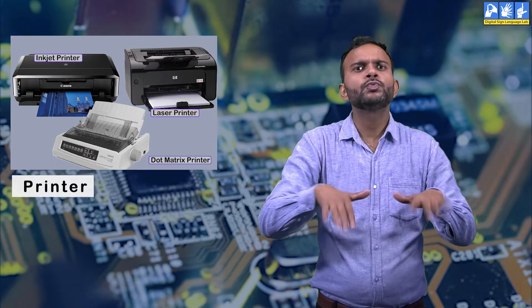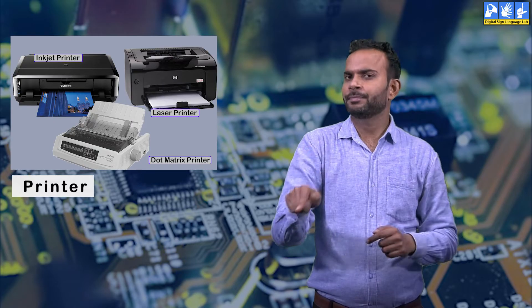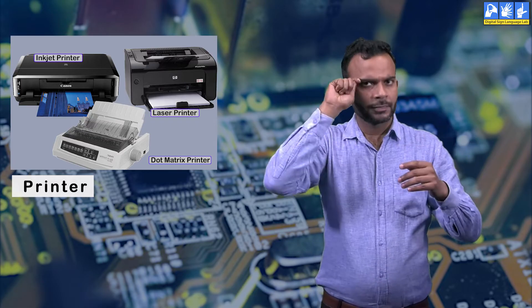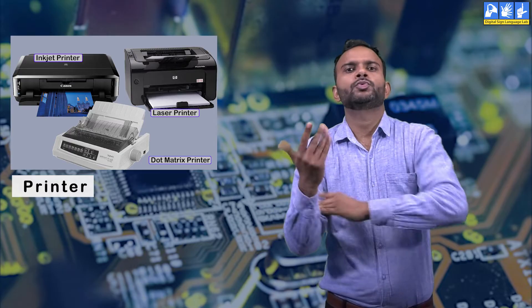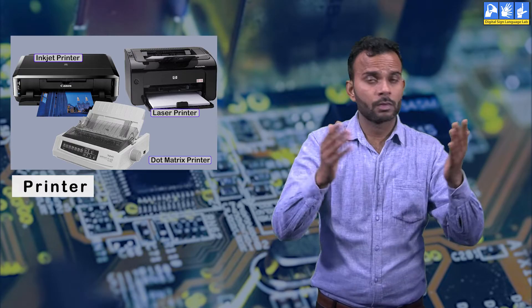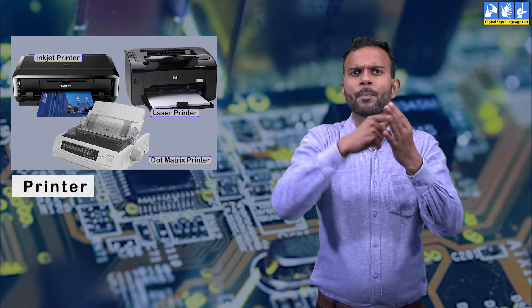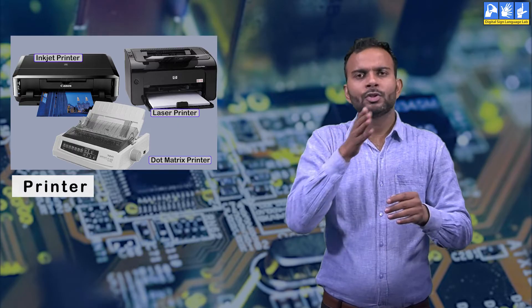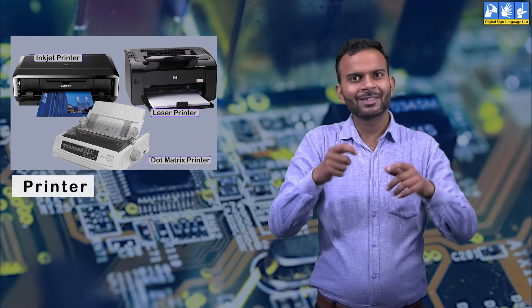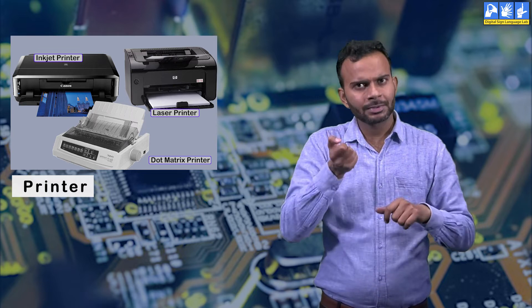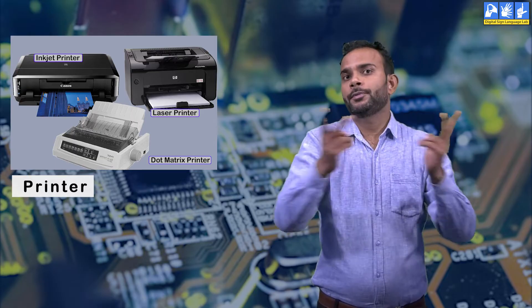Printer: A printer prints out work on paper. There are various printers available according to the usage. The usage of a printer can differ with the areas of work, like on railway stations, airports, and so on.